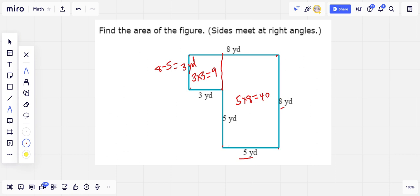So I've got 40 and I've got nine. That equals 49. And the units are going to be yards squared.